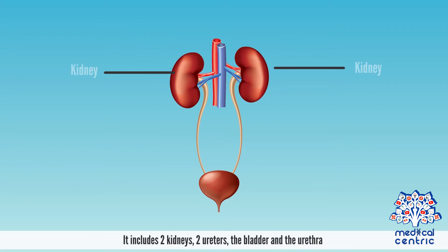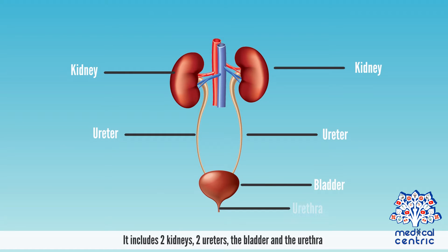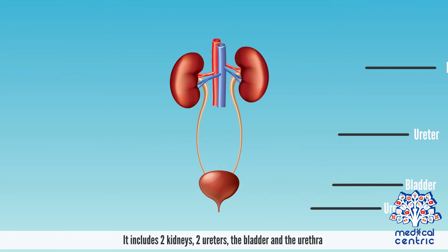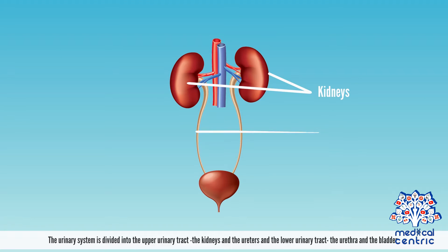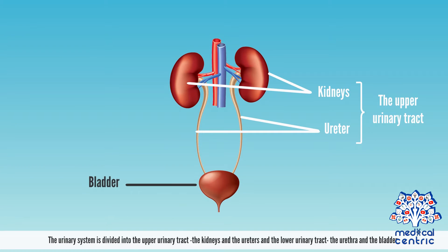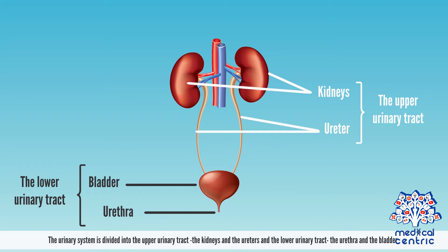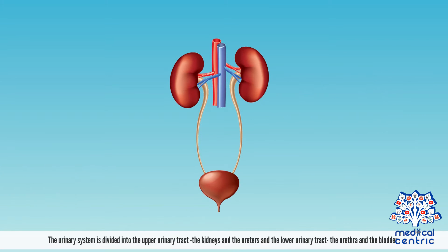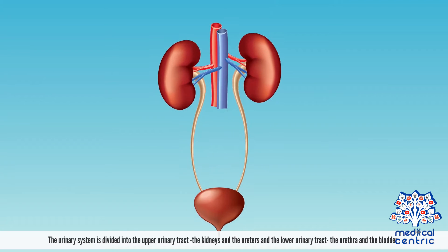The urinary system includes two kidneys, two ureters, the bladder, and the urethra. It is divided into the upper urinary tract — the kidneys and the ureters — and the lower urinary tract — the urethra and the bladder.